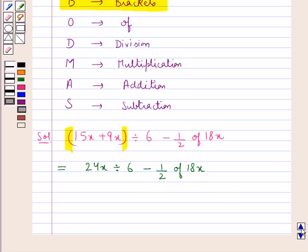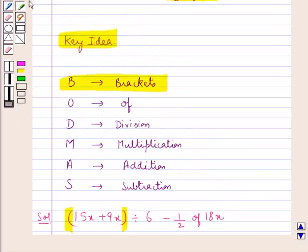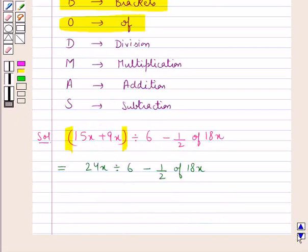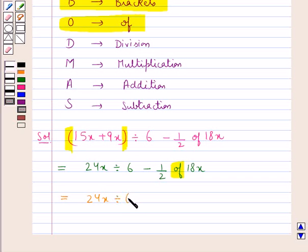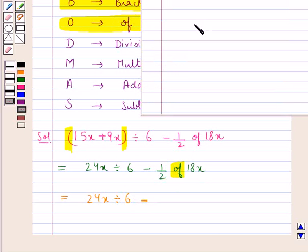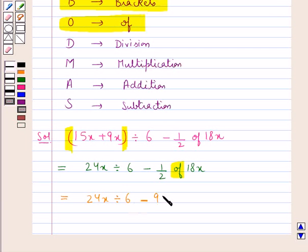According to the BODMAS rule, next we simplify of. So this is equal to 24x divided by 6 minus, now 1 upon 2 of 18x. 1 upon 2 of 18x means 1 upon 2 multiplied by 18x. Now 2 times 9 is 18, so this equals 9x.